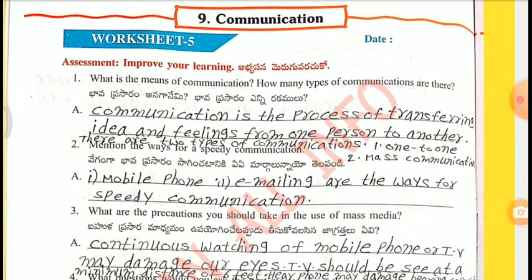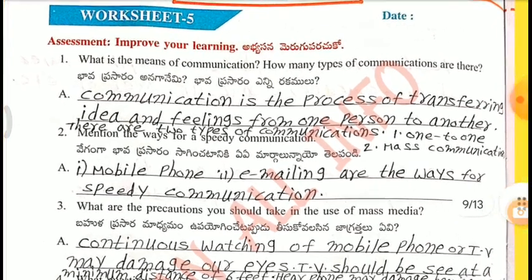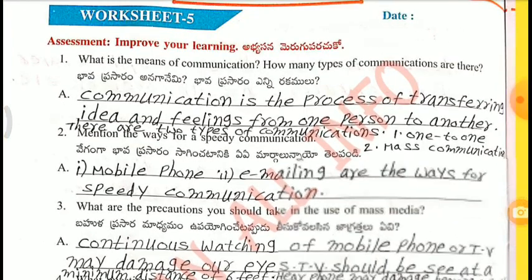Worksheet number five, Assessment — Improve your learning. 1st question: What is the means of communication? How many types of communications are there? Communication is the process of transferring ideas and feelings from one person to another. There are two types of communications: one — one to one; two — mass communication.